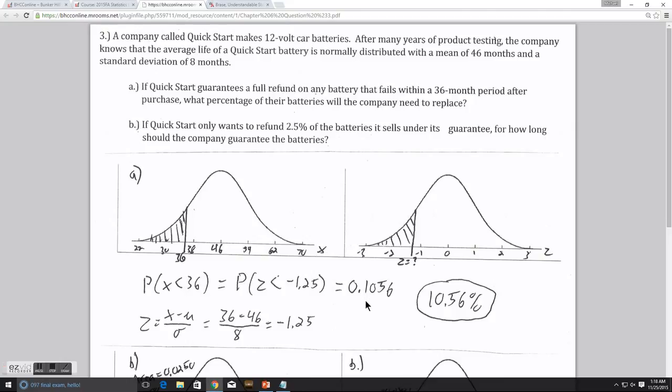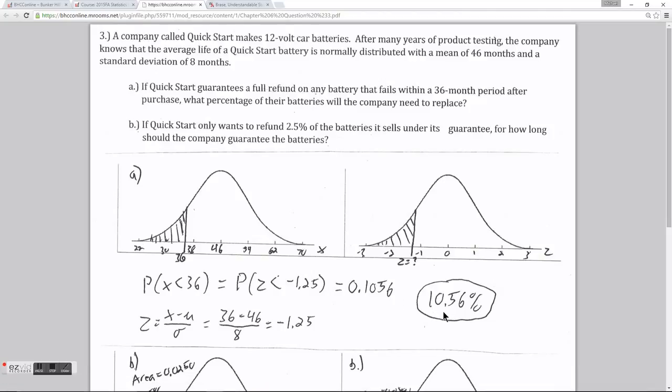Having a probability that a random battery will last for less than 36 months of 0.1056 is equivalent to the reasoning that 10.56% of the batteries are going to last less than 36 months.